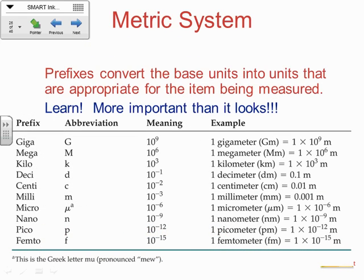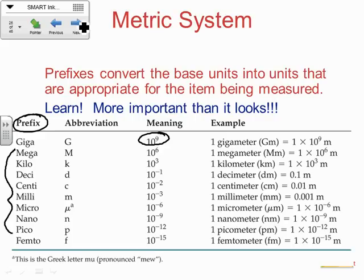In the metric system — which is really sort of a synonym for the SI system; the SI is an updated version of the metric system — you've got all these different prefixes, and these prefixes basically mean a certain number. Giga means 10 to the 9th, mega means 10 to the 6th, and so on. I would say from mega to probably pico will be good for you to know. Giga and femto don't come up that often.